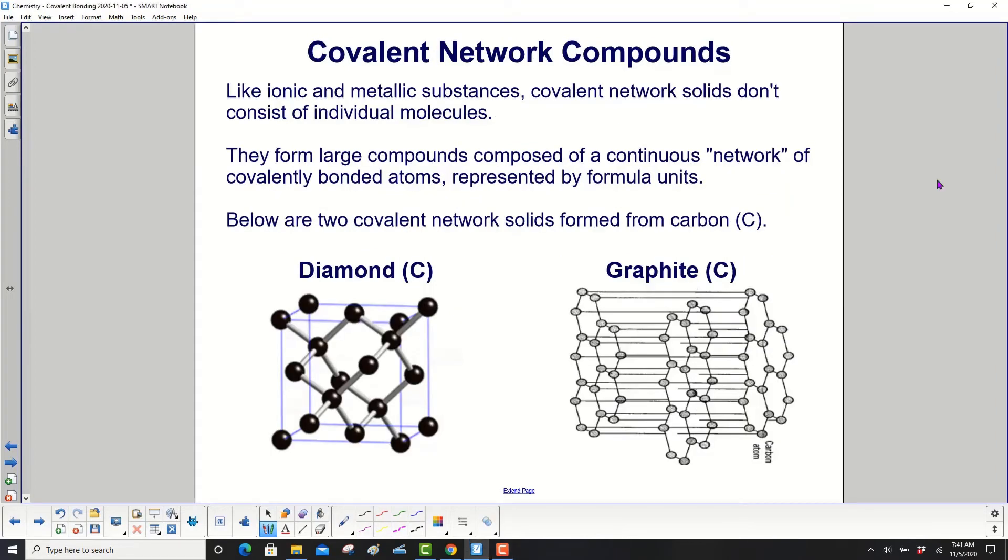Like ionic and metallic substances, covalent network solids don't consist of individual molecules. They form large compounds composed of a continuous network of covalently bonded atoms represented by formula units.